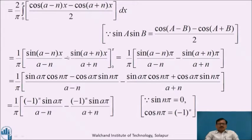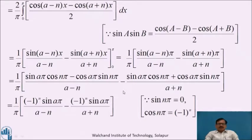For the lower limit, sin(0) = 0, therefore we get zero. Now expanding sin(a−n)π using the formula sin(A−B): sin(aπ)cos(nπ) − cos(aπ)sin(nπ) divided by (a−n). Expanding sin(a+n)π: sin(aπ)cos(nπ) + cos(aπ)sin(nπ) divided by (a+n). Since cos(nπ) = (−1)ⁿ and sin(nπ) = 0, the second terms vanish, giving (1/π) [(−1)ⁿ sin(aπ) / (a−n) − (−1)ⁿ sin(aπ) / (a+n)].